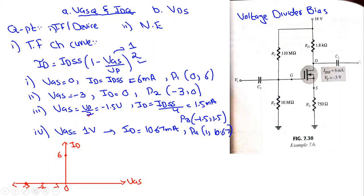The third point at VGS = −1.5V gives ID = 1.5 mA, plotted accordingly. Joining these three points gives the left side of the transfer characteristic. On the right side, VGS = 1V gives ID = 10.67 mA. Joining all four points completes the transfer characteristic curve, showing that for VGS > 0 there is current above IDSS.